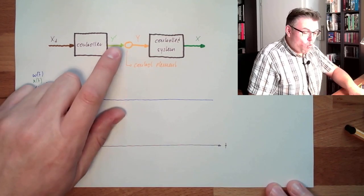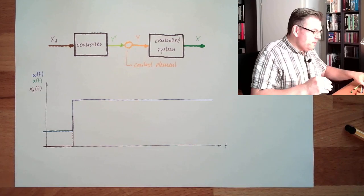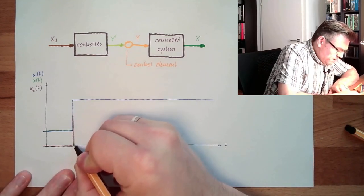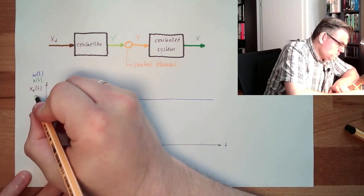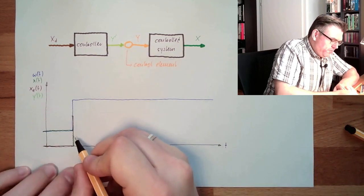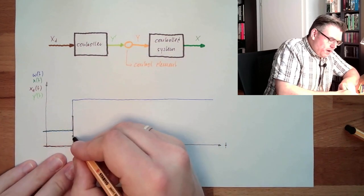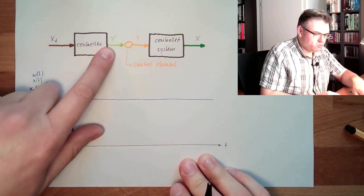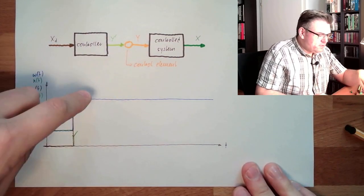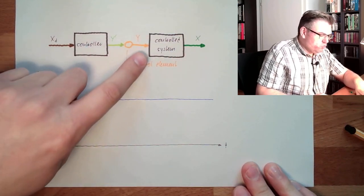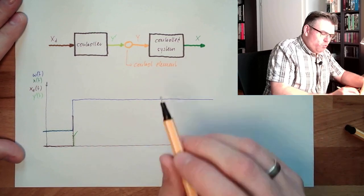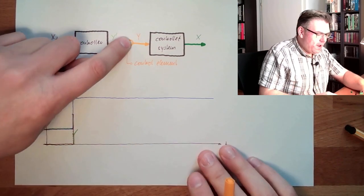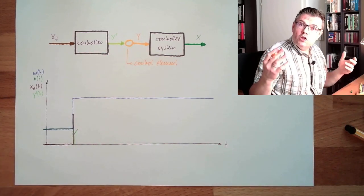So what will our y dash do? Depending on the controller type, there will probably be a little jump at the beginning, and then because there's a P part and also an I part, it will start to grow. Because this is growing, our correcting variable y - let's assume these are the same - will cause x to react.